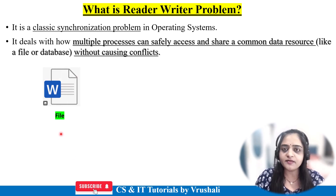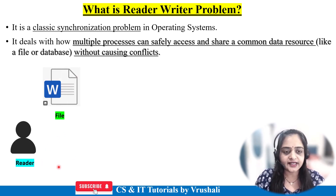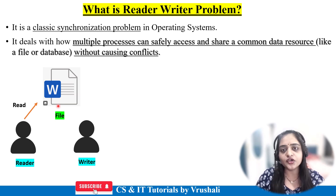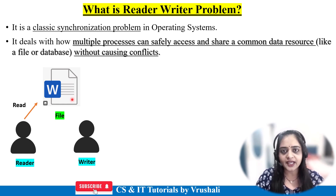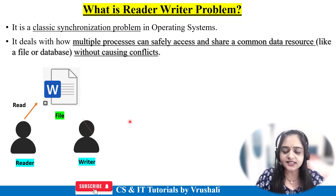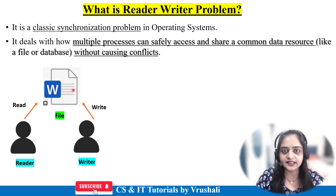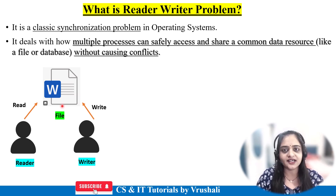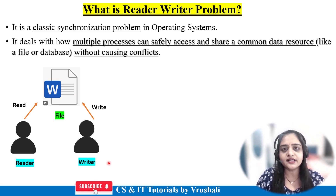Consider a diagram with one Microsoft Word file. On one side there is a reader and on another side there is a writer. The reader reads lines 1, 2, 3, 4 and is currently on line 5. At the same time the writer performs an update on lines 1 and 2. So the reader reads the previous, oldest data — not the updated data — because the writer updated earlier lines while the reader was on line 5. This conflict is called the reader-writer problem.